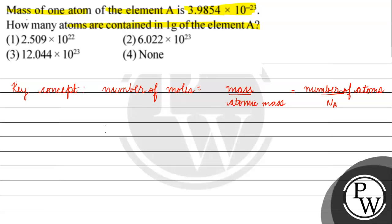The mass given is 3.9854 × 10⁻²³ grams. Atomic mass is unknown — we'll call it x. The total mass given is 1 gram. Avogadro's number is 6.022 × 10²³ per mole. We need to find x.